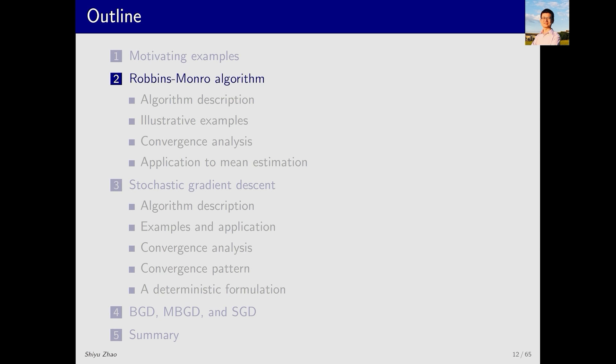Let's move on to the second part. Now we introduce the Robbins-Monro algorithm, which is a classic algorithm in stochastic approximation theory. After learning this algorithm, you will find that it is very simple, powerful and elegant. Let's take a look.